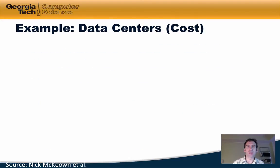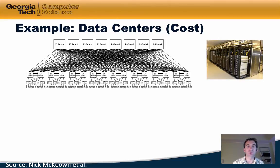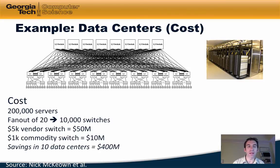Another area where the separation of the control and data planes can significantly benefit network operators is in data centers. In particular, this separation can drastically reduce the cost of running a data center. Looking at a typical data center with about 20,000 servers and a fan-out of 20 in the data center topology, the requirements to support this topology is about 10,000 switches.